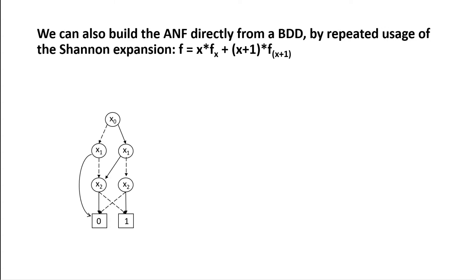Another useful feature is that you can actually build the algebraic normal form directly from a binary decision diagram. This is done by applying the Shannon expansions from the bottom all the way up. This assigns algebraic normal forms to each of the nodes in the graph, and eventually you will have an algebraic normal form associated with the root node. This ANF is what we consider associated with the whole binary decision diagram — it is the Boolean function the BDD represents.